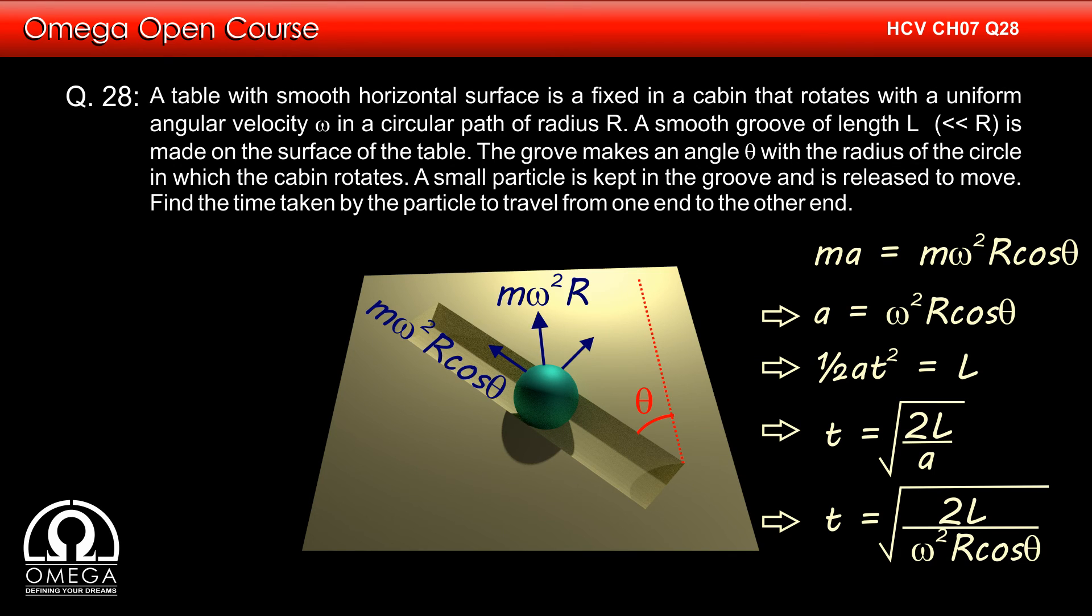Putting the value of A, it becomes root under 2L by omega square R cos theta. This is our answer.